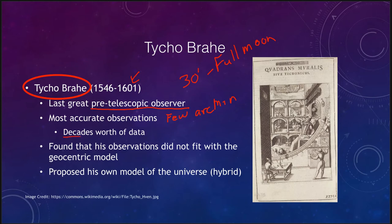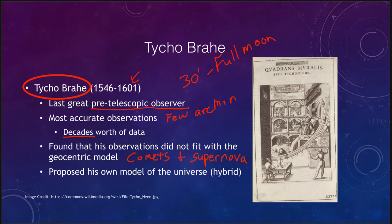Tycho gathered decades' worth of data on planetary positions, and he found that his observations did not fit with the geocentric model. He observed things like comets and a supernova — a new star that appeared. Under the Greek model, the heavens were unchanging, so comets and supernovae had to be atmospheric effects, since the heavens could not change but the earth could. However, when Tycho measured these objects he could not detect parallax, which he should have been able to if they were in the earth's atmosphere. This indicated they were actually on the sphere of the stars, and that the stellar sphere could change.